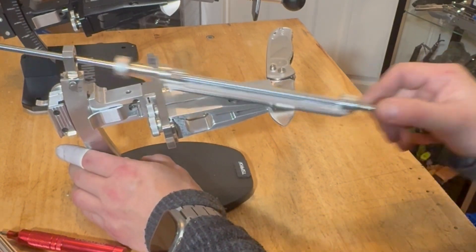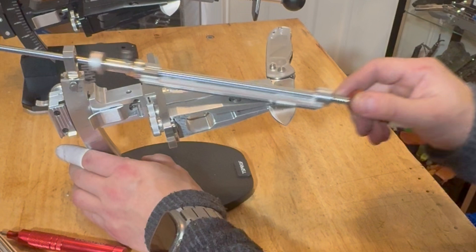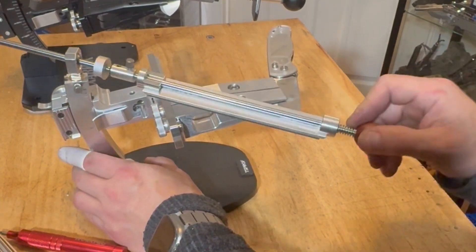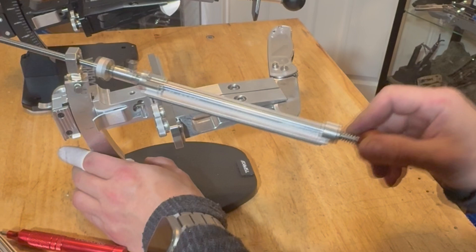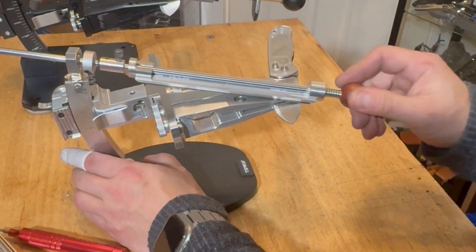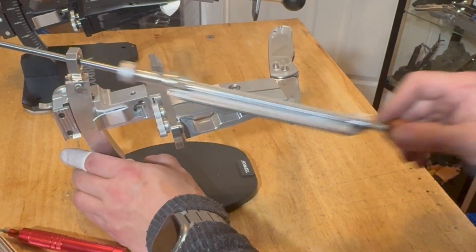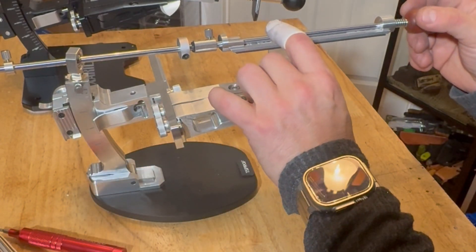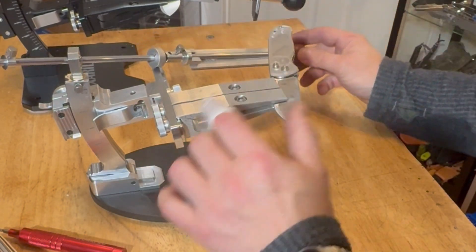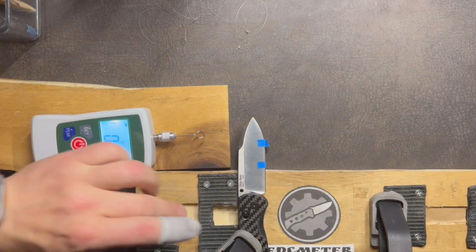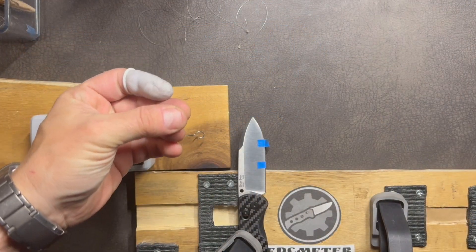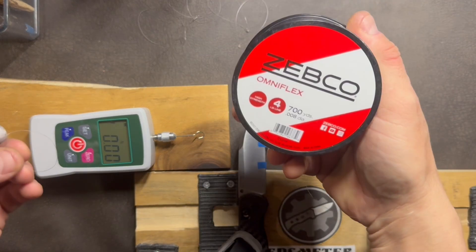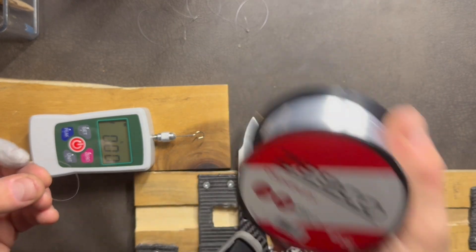Let's call it 63 HRC, which is a pretty high range for Nitro-V, but it's sharpening pretty well. Actually, it's going fast. It sharpens smoothly. I have no complaints about that.